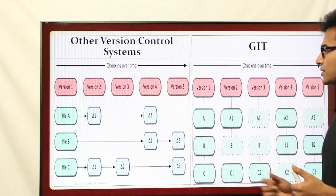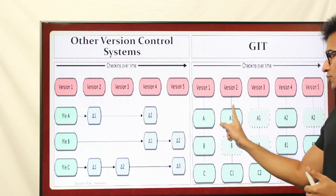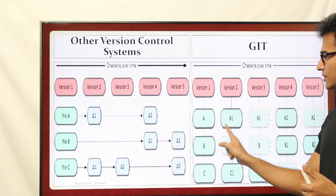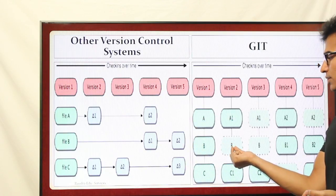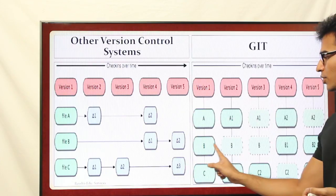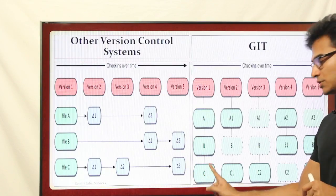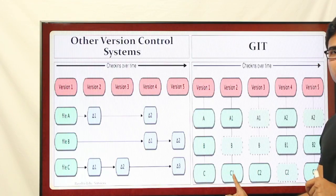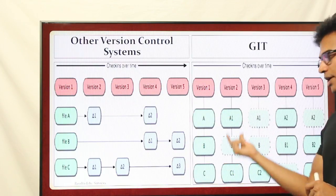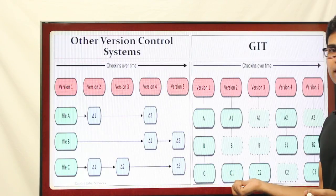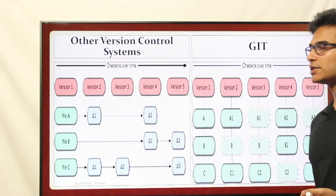Coming to Git — whenever there is a File A and you apply some changes to it, Git will apply the changes and create a new file. This new file is the changed file and it will be stored in Version 2. If you don't make modifications to File B, it will just leave a reference — a pointer pointing to File B from the original. If you made changes to File C, the changes are applied and that new copy is stored. When you want to open Version 2, it will directly show you all the files without any computation. Space might be more, but time is less. So Git is fast compared to other version control systems.